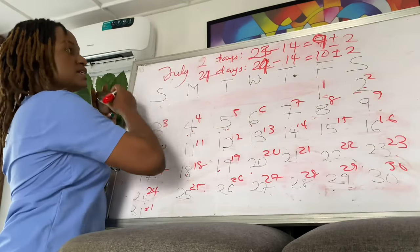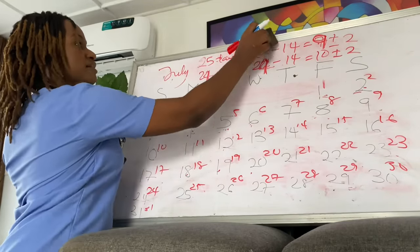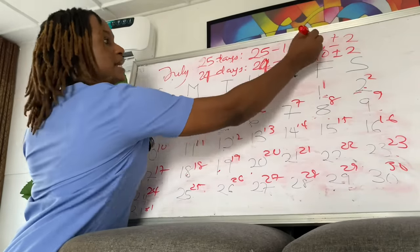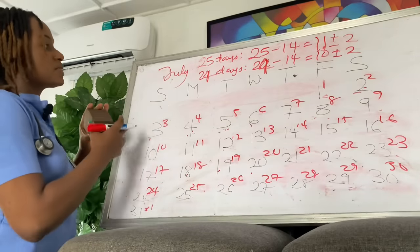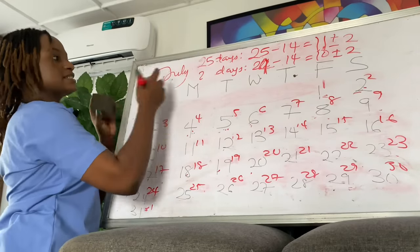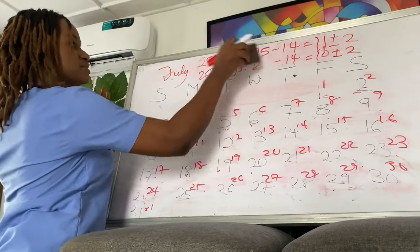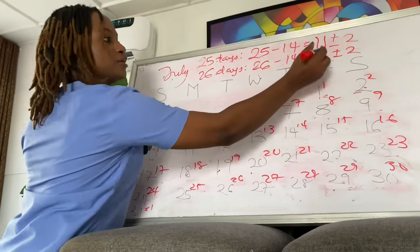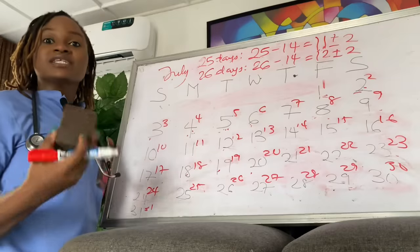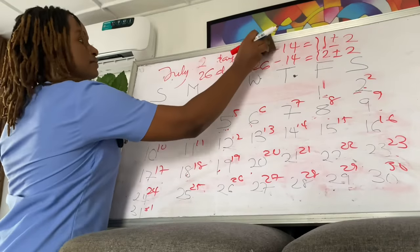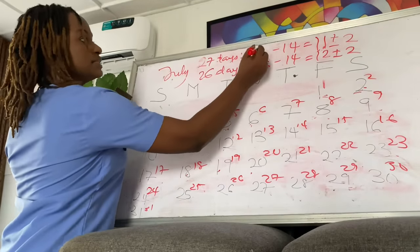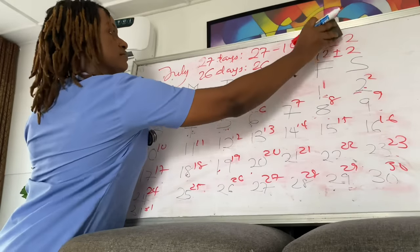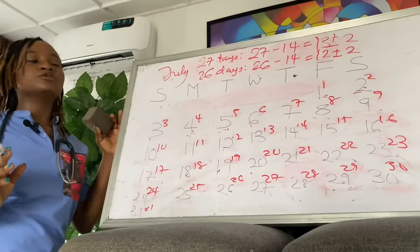For a 25-day cycle: 25 minus 14 equals 11, plus or minus 2. For a 27-day cycle: 27 minus 14 equals 13, plus or minus 2.